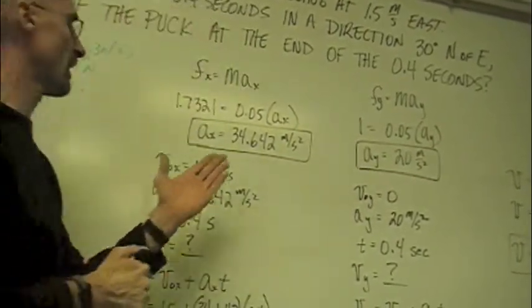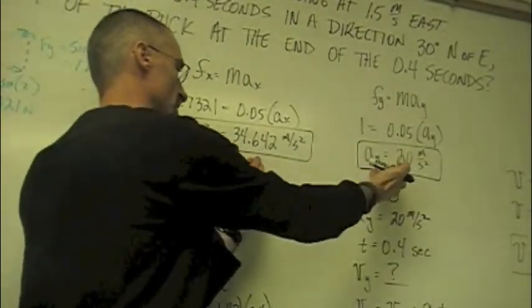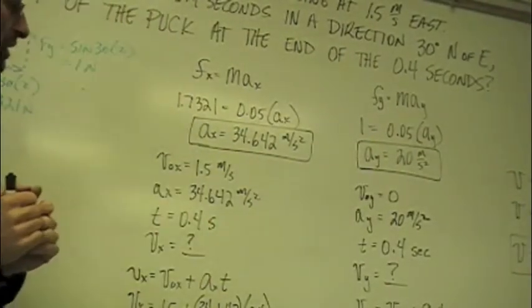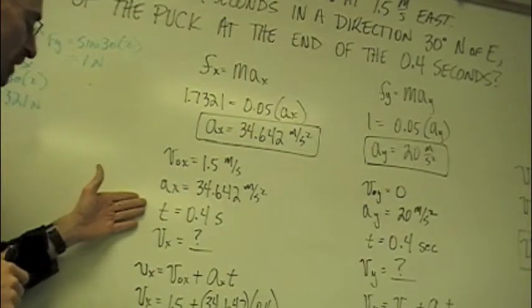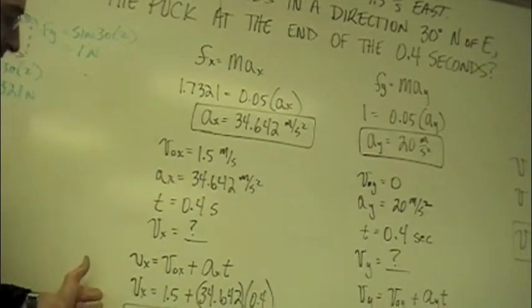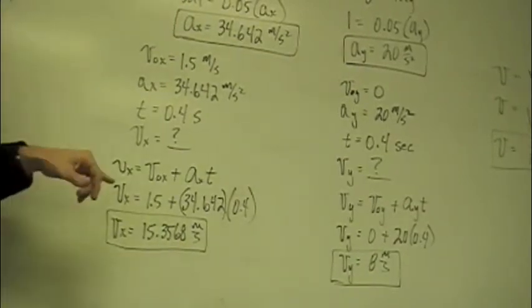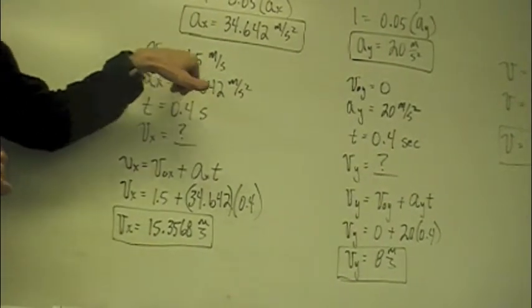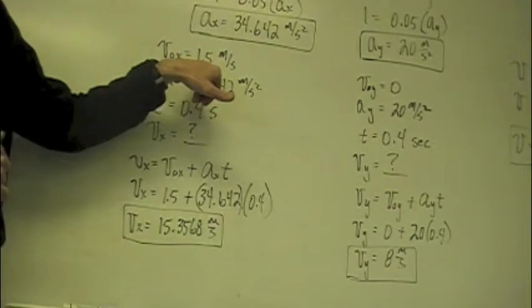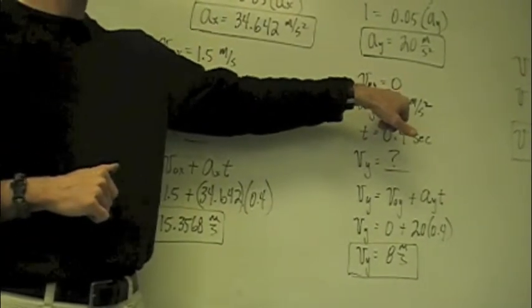Once we know the acceleration in the x direction, the acceleration in the y direction, it's a simple kinematics equation type problem to figure out how fast we're going in the x and how fast we're going in the y. So, you'll notice in the x direction we had an initial velocity. In the y direction we do not.